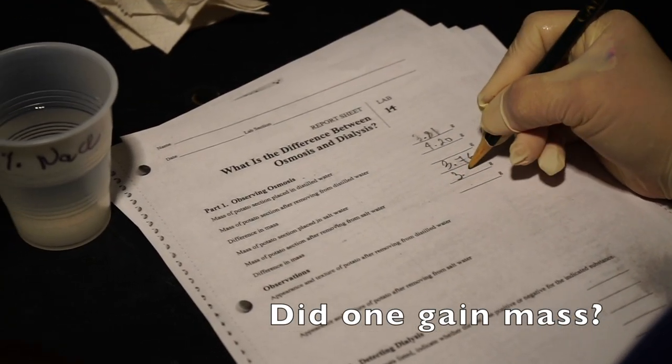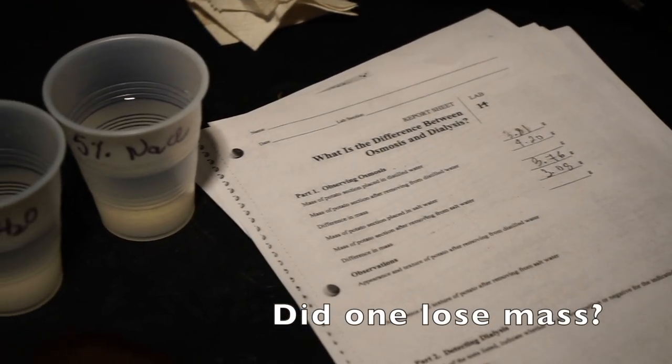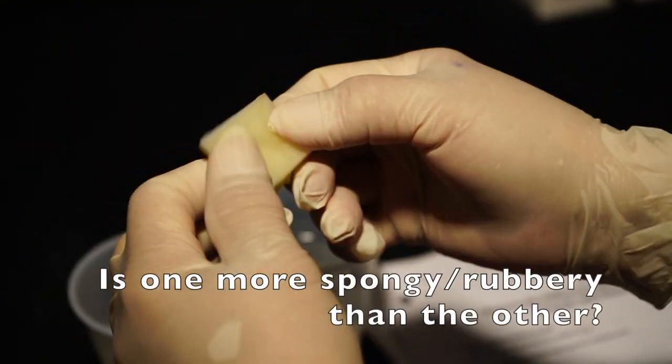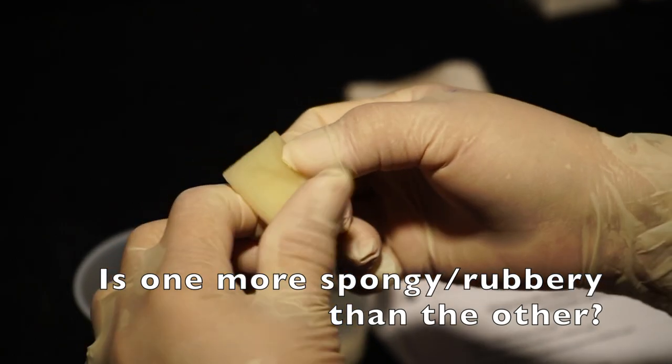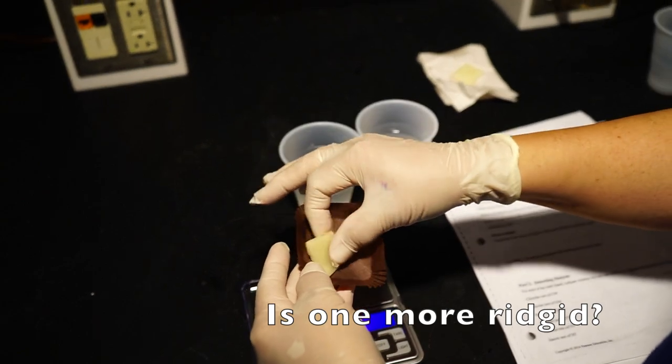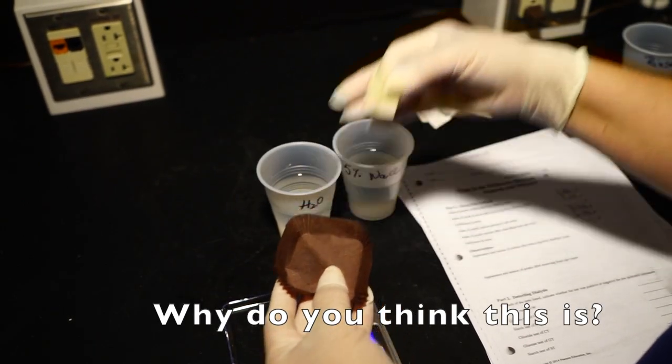Did one gain mass? Did one lose mass? Is one more spongy or rubbery than the other? Is one more rigid? Why do you think this is?